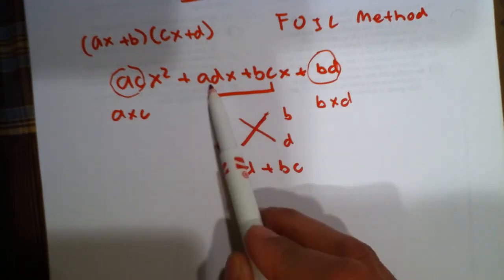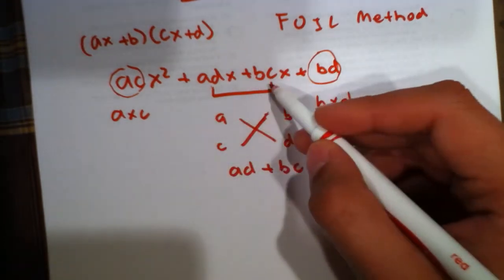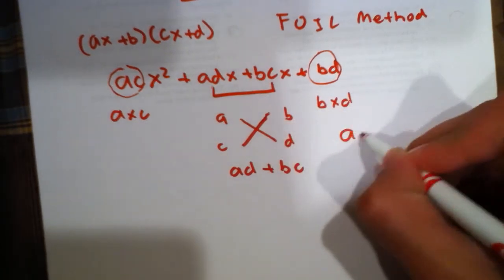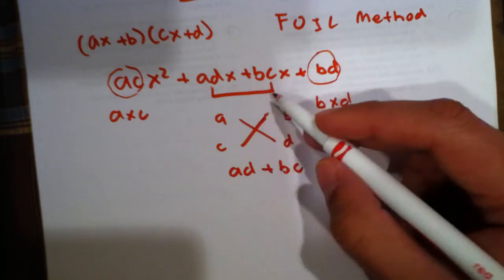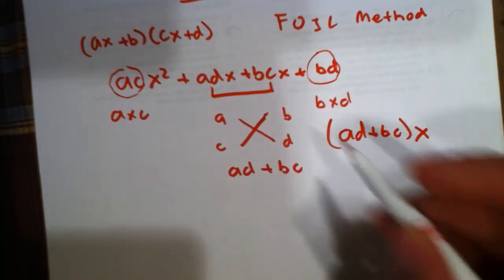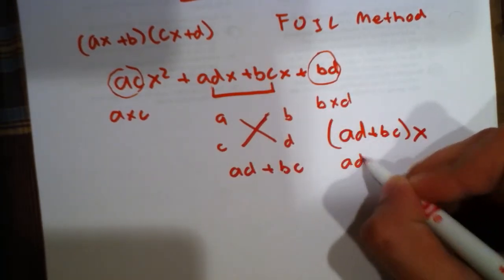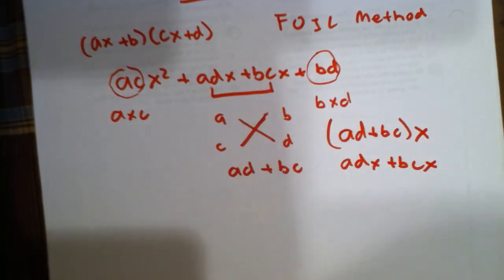And this is actually, in the end, what will be the coefficient in front of this x term, because this is equal to adx plus bcx, which is actually what we have here.